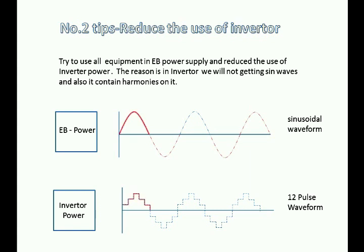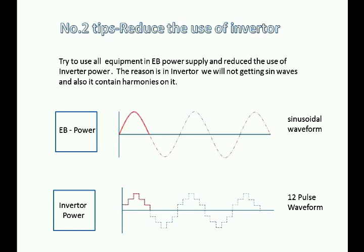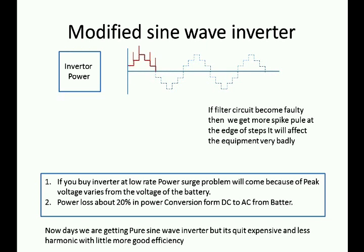Number 2: Reduce the use of inverter. Try to use all your equipment on EB power supply and reduce the use of inverter power. The reason is that in an inverter, you will not get a sinusoidal waveform — it contains harmonics. The inverter produces a non-sinusoidal, square waveform, and at the edges of the square waveform, there are spikes and more harmonics in the circuit.